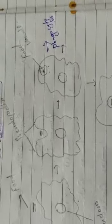The process of obtaining food by amoeba is called phagocytosis.